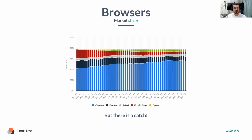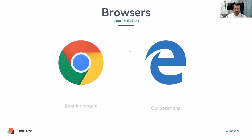If you take into consideration the whole internet, there is a catch here — the most popular really doesn't mean anything from my experience. There are actually two segments of browsers. The data we saw is popularity throughout the whole world, and around 70% of people on the planet use Chrome. But there is another world: the world of corporations, large businesses. Not always is Chrome the browser of their choice.